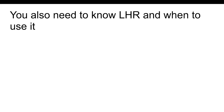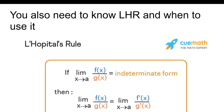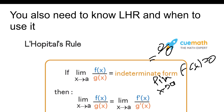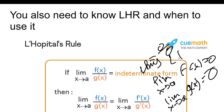You also need to know L'Hôpital's rule and when to use it. If the limit as x approaches a of f(x) over g(x) gives you an indeterminate form, then that limit equals the limit as x approaches a of f'(x) over g'(x). For FRQs, you must show that the numerator and denominator approach 0 independently — you cannot just write 0/0. You need to write the limit of f(x) equals 0 and the limit of g(x) equals 0 separately, then invoke L'Hôpital's rule.